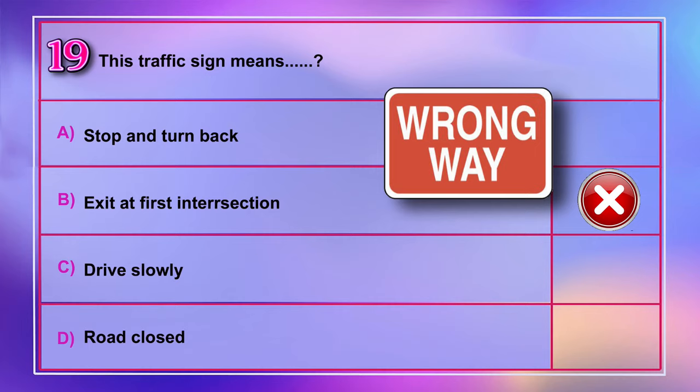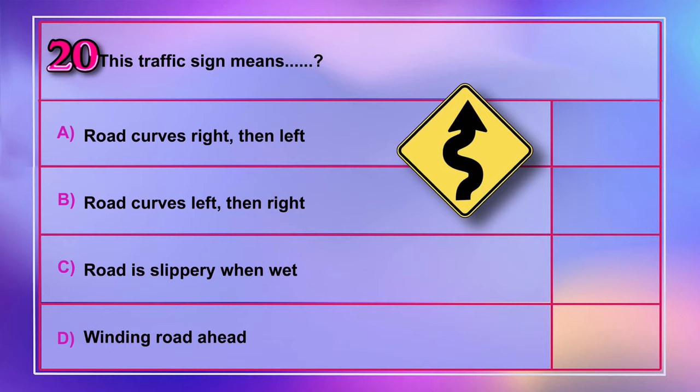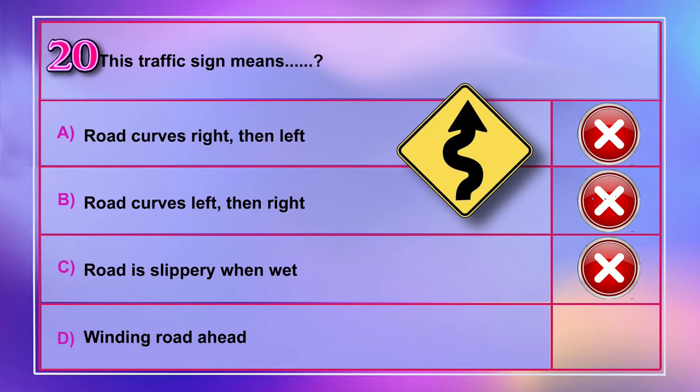Question number 20: This traffic sign means A) road curves right then left, B) road curves left then right, C) road is slippery when wet, D) winding road ahead. Correct answer is D: winding road ahead.